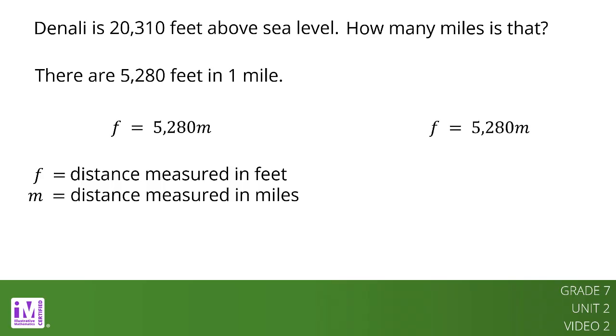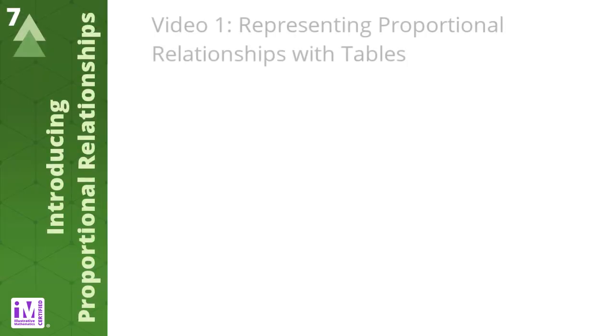Since we know Denali is 20,310 feet above sea level, we can write 20,310 equals 5,280m. So m equals 20,310 over 5,280, which is approximately 3.85. This means that the peak of Denali is about 3.85 miles above sea level.